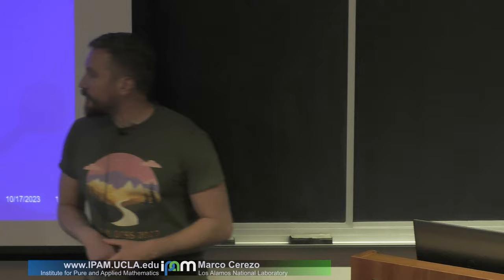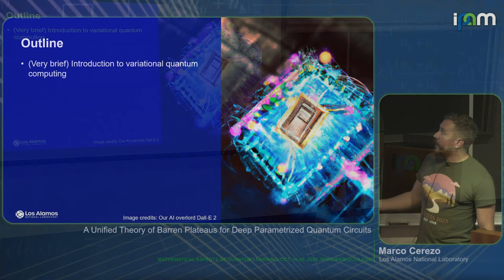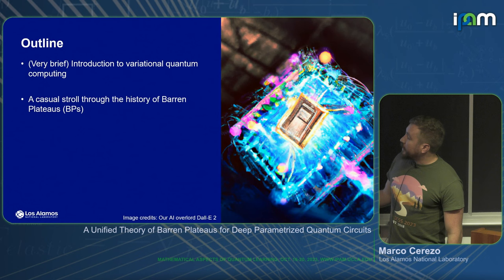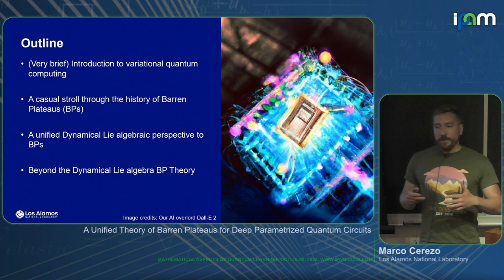Today I'm going to be talking about two recent works — one published about a month ago, and another going on archive tomorrow. It's essentially about a unified theory for Barren Plateaus for deep parameterized quantum circuits. Here's a quick outline: I'll briefly cover variational quantum computing, do a casual stroll through the history of Barren Plateaus, show how we can unify results with a Lie algebraic perspective, go a bit beyond this theory, and then give an outlook.